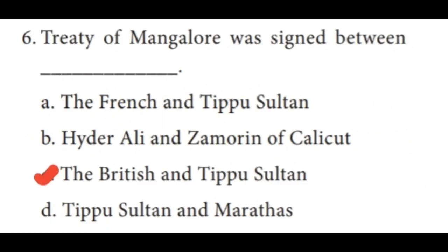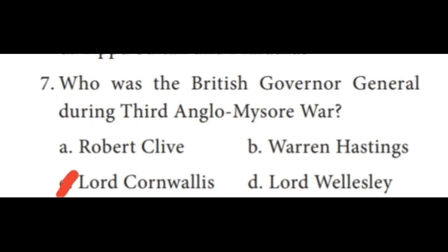Sixth one: the Treaty of Mangaluru was signed between — the correct answer is the British and Tipu Sultan. Seventh one: who was the British Governor-General during the Third Anglo-Mysore War? The correct answer is Lord Cornwallis.